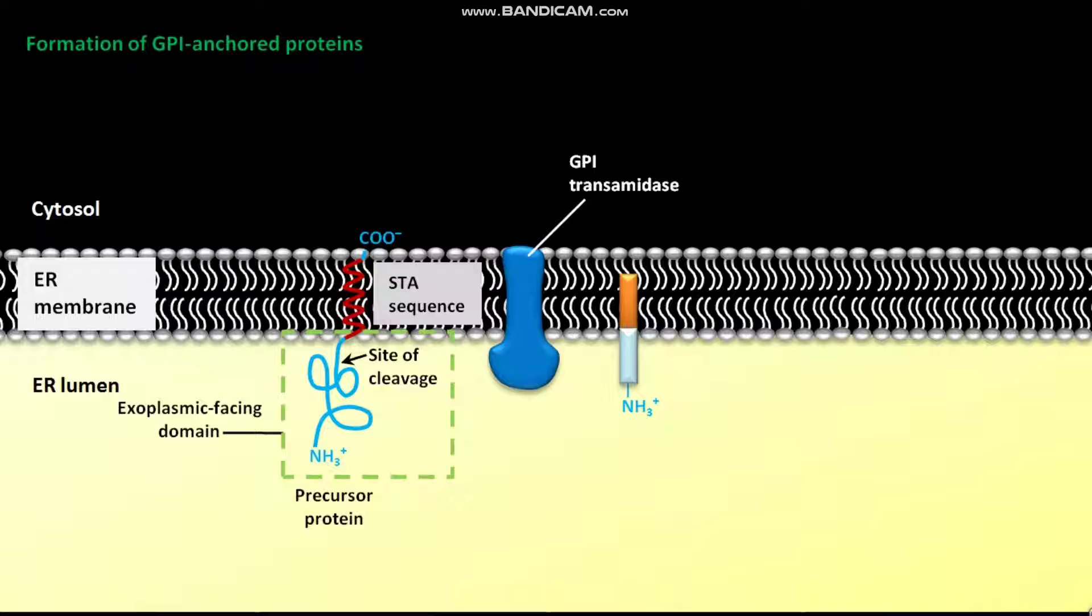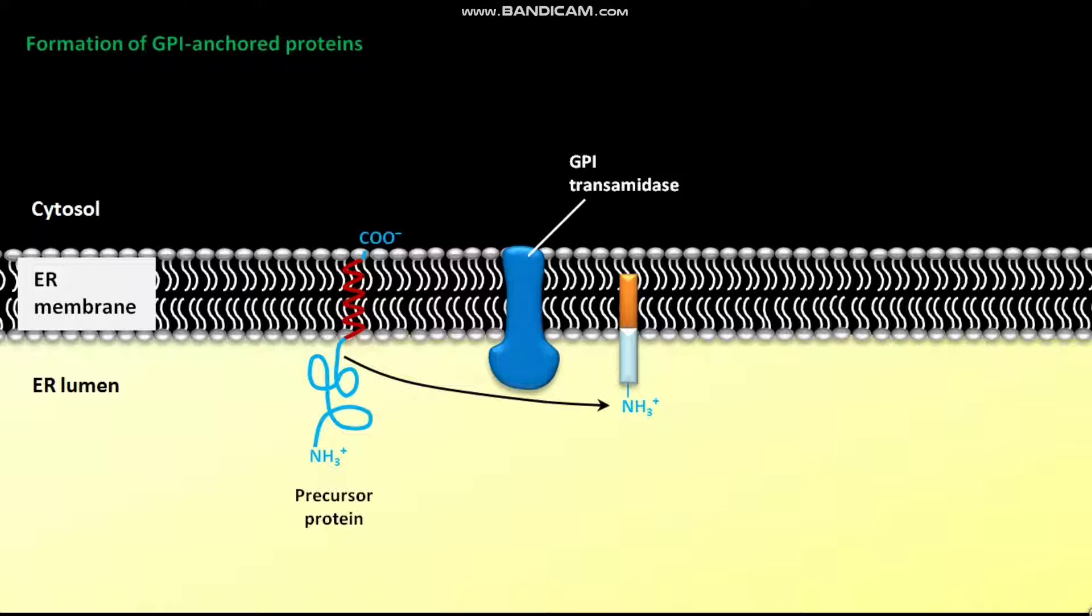The enzyme transfers the carboxyl group of the new C-terminus to the terminal amino group of a preformed GPI anchor in the ER membrane.